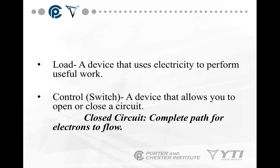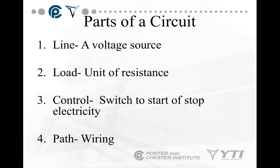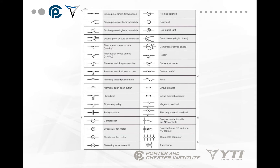A closed circuit is a complete path for electrons to flow; an open circuit is a broken path. Knowing those two terms is going to save you further down the road. We have four absolute parts of a circuit: Line is your voltage source. Load is a unit of resistance — something that causes resistance and uses power. Control is a switch to start or stop the electricity. Path is the wiring. You must have line, load, control, and path for any circuit to work.